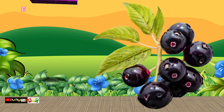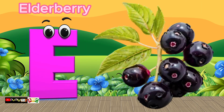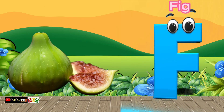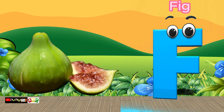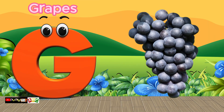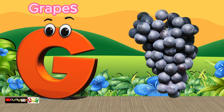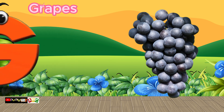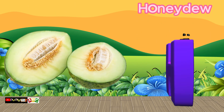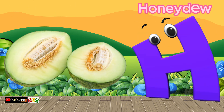E is for Elderberry, E-E-Elderberry. F is for Fig, F-F-Fig. G is for Grapes, G-G-Grapes. H is for Honeydew, H-H-Honeydew.